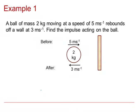Example 1: a ball of mass 2 kilograms is moving at a speed of 5 metres per second when it rebounds off a wall at 3 metres per second. Find the impulse acting on the ball. Impulse is a vector quantity, so I'm going to put the impulse on my diagram. The wall is going to push the ball away, so the impulse on the ball is going to be to the left. That's my impulse I.